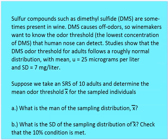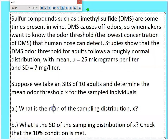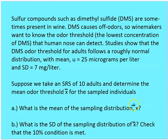Let's go through example 7.3.1. Sulfur compounds such as DMS are sometimes present in wine. DMS causes off-odors, so winemakers want to know the odor threshold — the lowest concentration of DMS that a human nose can detect. Studies show that the DMS odor threshold for adults follows a roughly normal distribution with a mean of 25 micrograms per liter and a standard deviation of 7 micrograms per liter. Suppose we take a simple random sample of 10 adults and determine the mean odor threshold. What is the mean and what is the standard deviation of the sampling distribution?